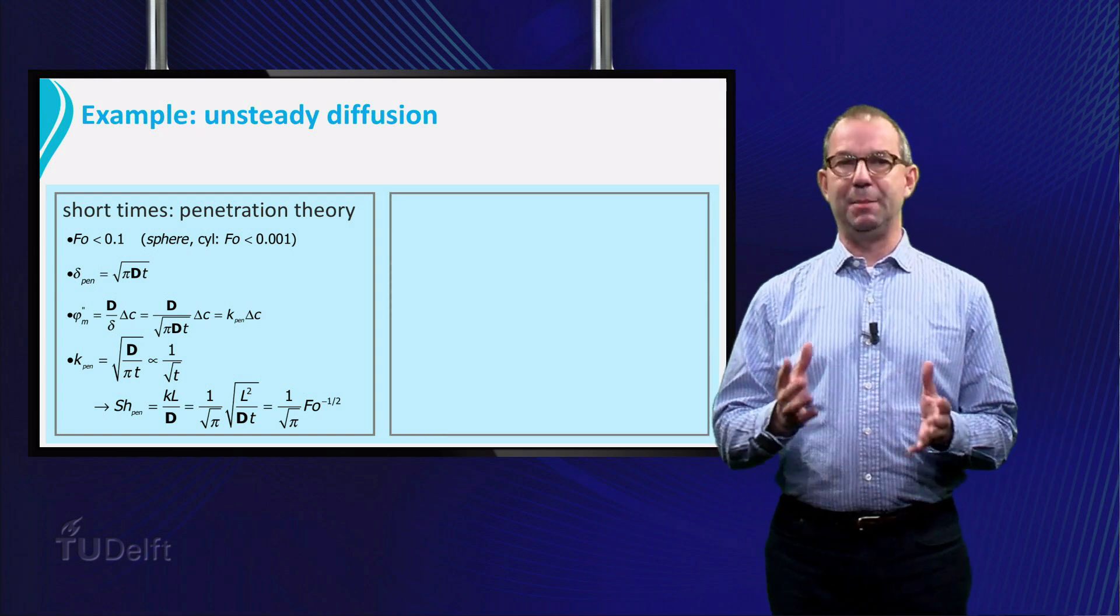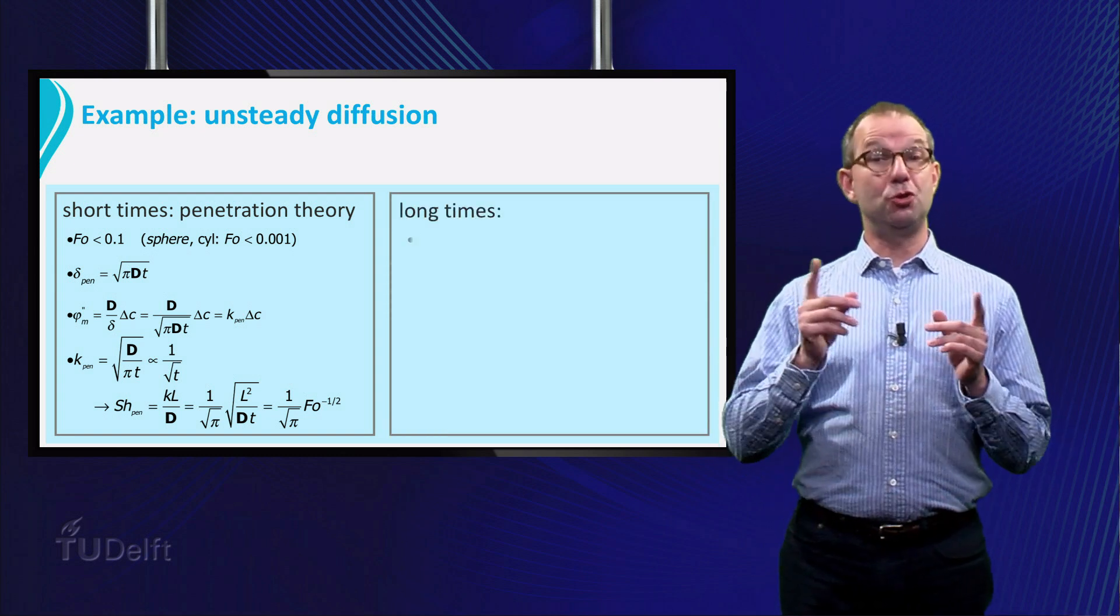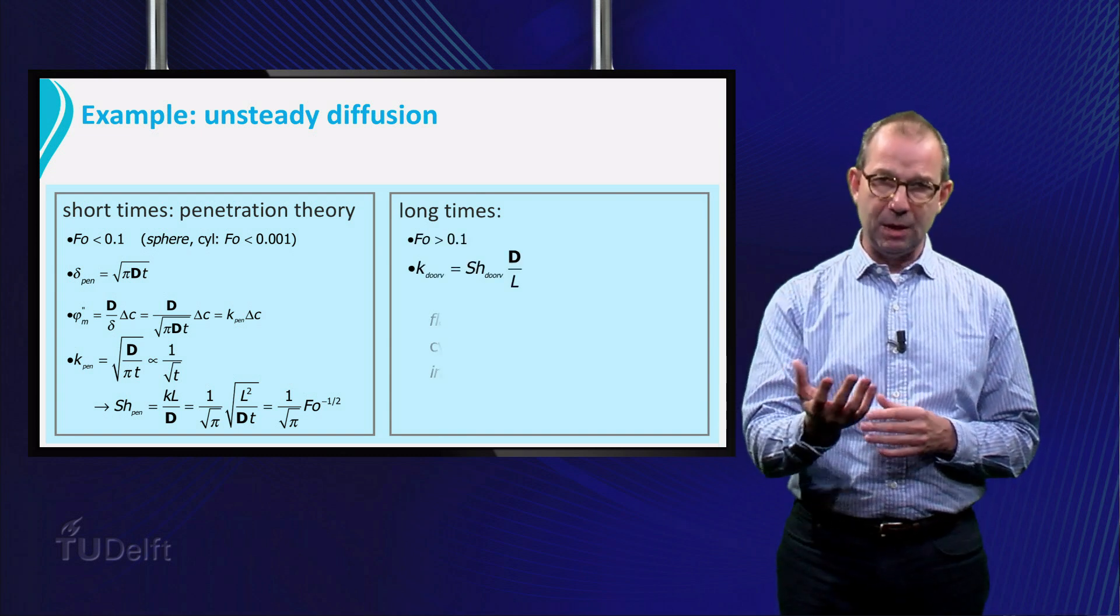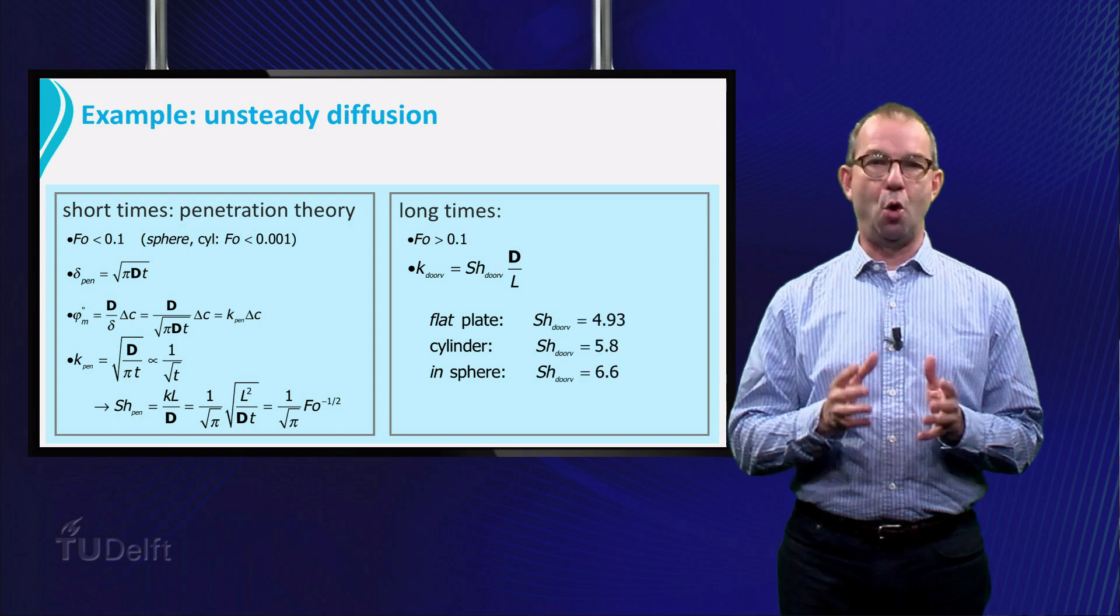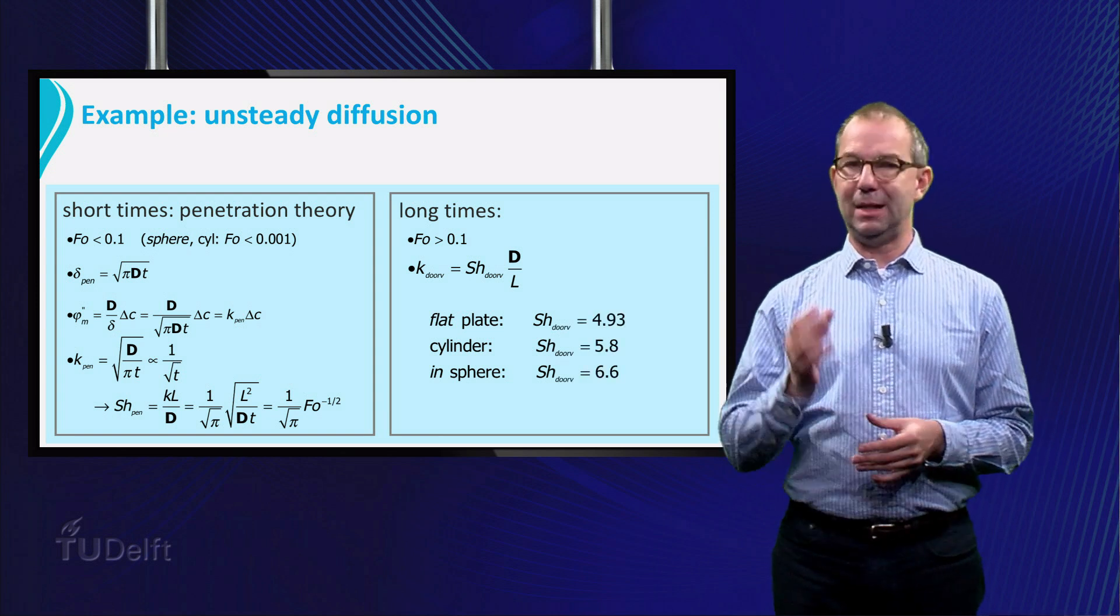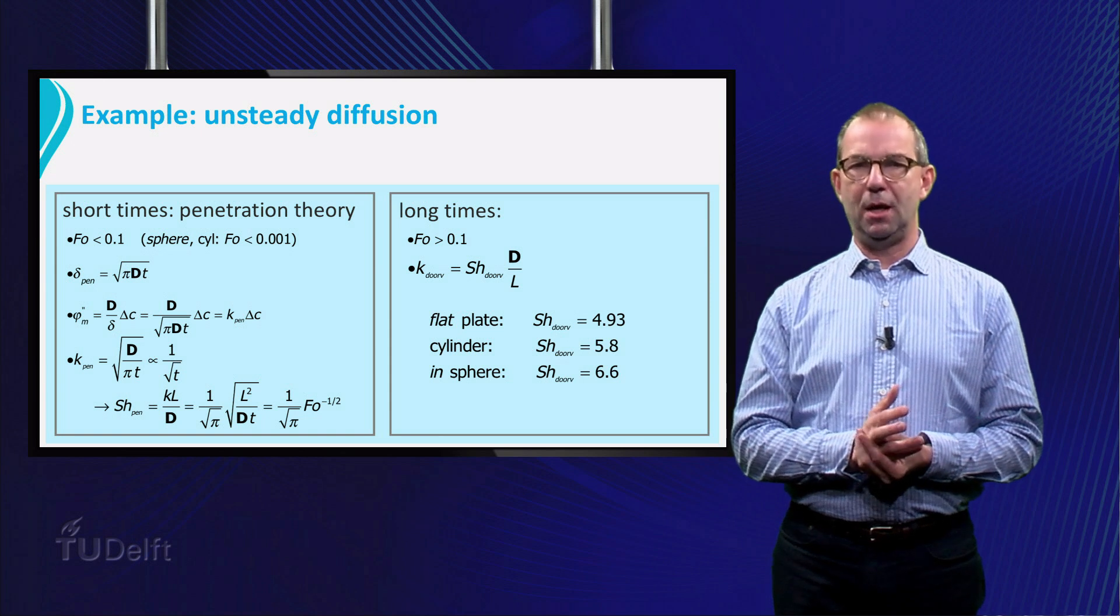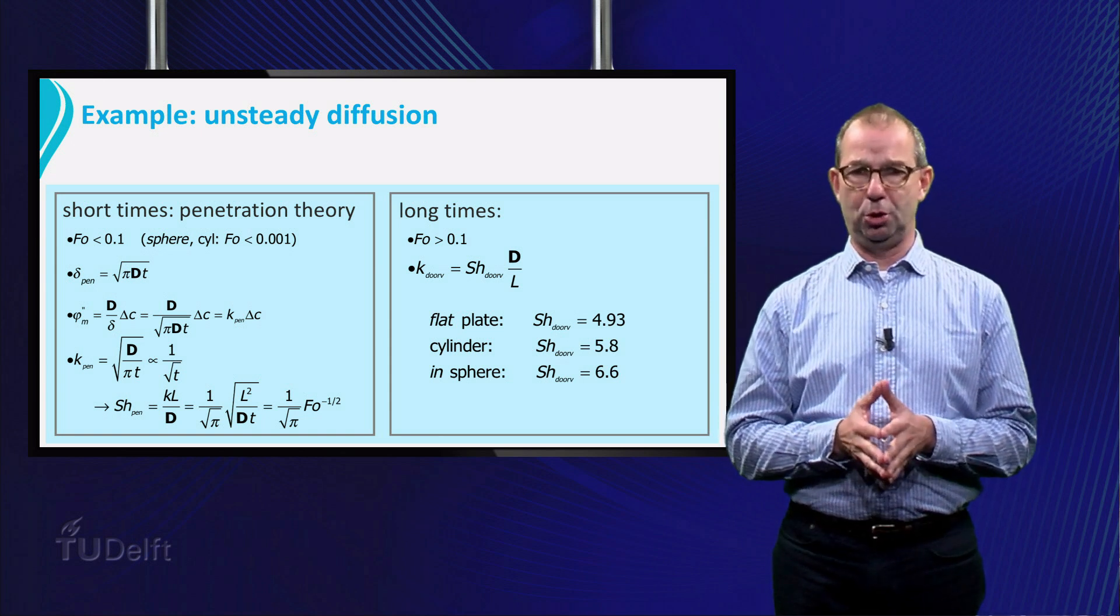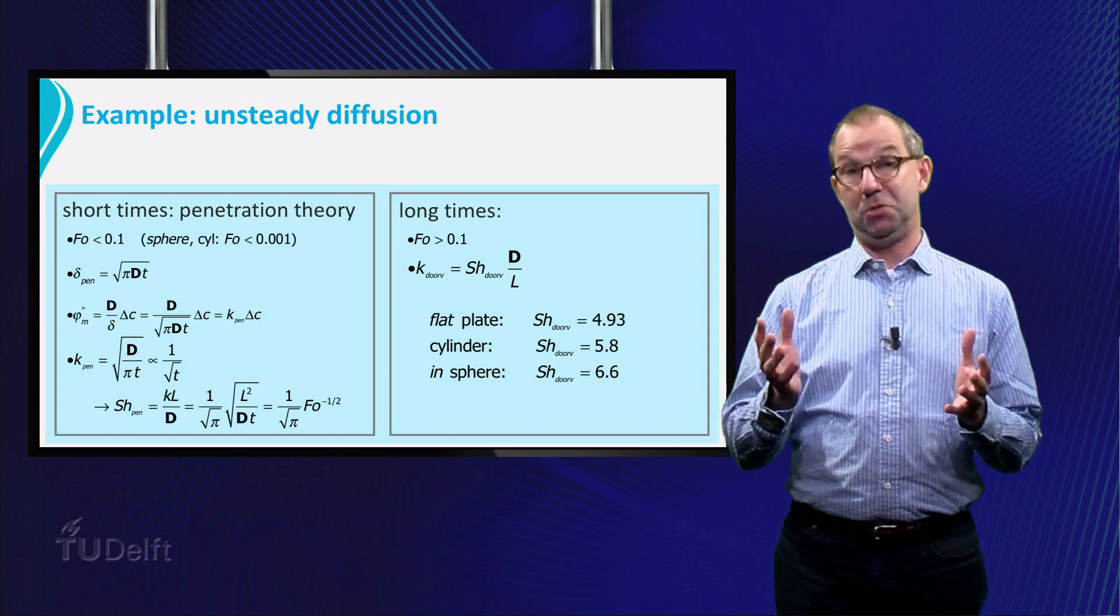See the table where we state that Sherwood is a function of Fourier which is in essence accounting for time. Penetration theory has a limit. If the time is too long, the changes in concentration have progressed too much and we shift over to long times. Again, the analogy is very strong as all we have to do is replace Nusselt by Sherwood, and everything else stays the same.